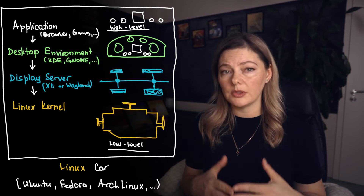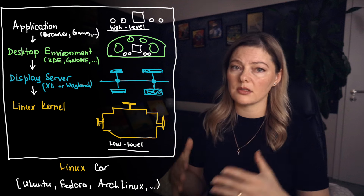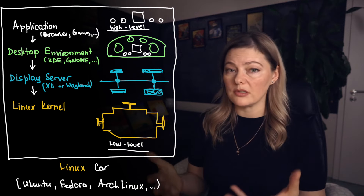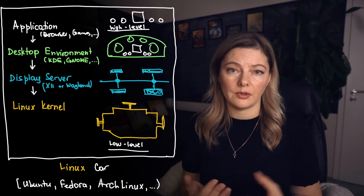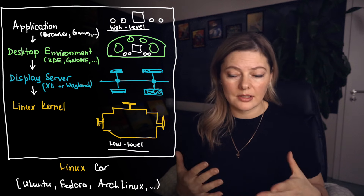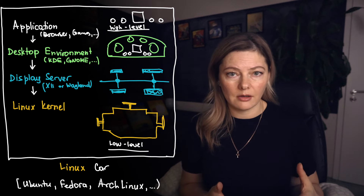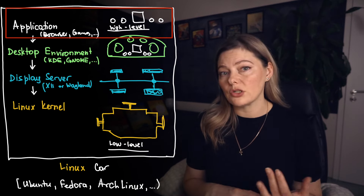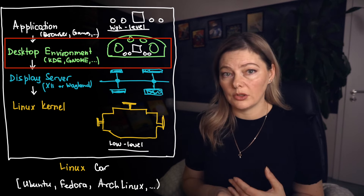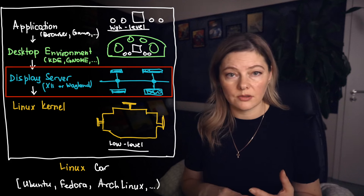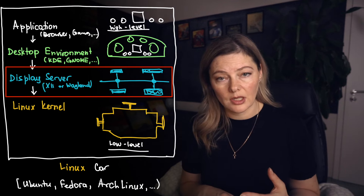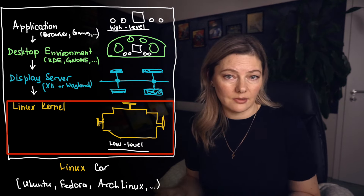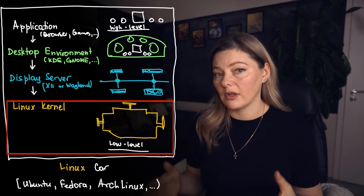The desktop environment interacts closely with the display server to create what you see and interact with. When you open an application window, it's like getting into a car and going for a drive. The application talks to the desktop environment, which then talks to the display server, which in return talks to the Linux kernel to make everything happen.